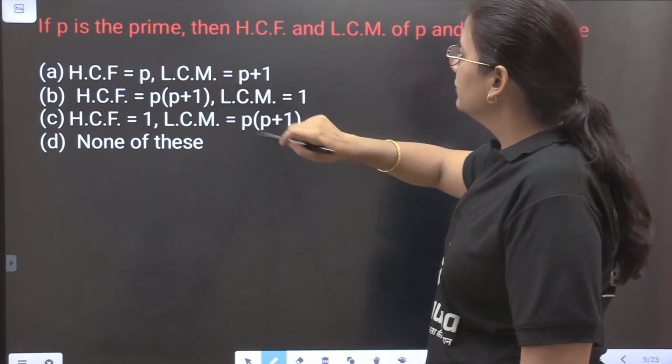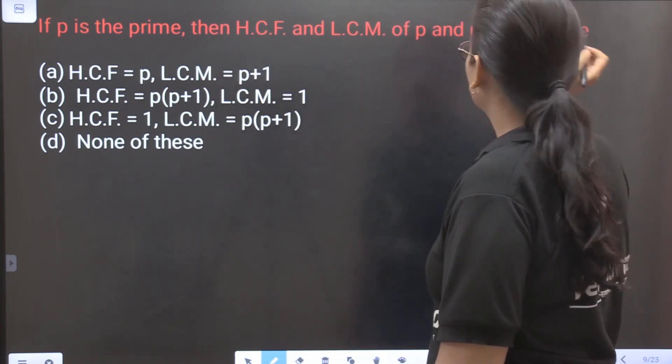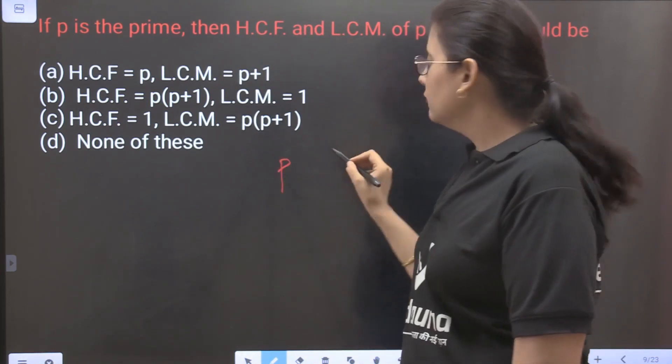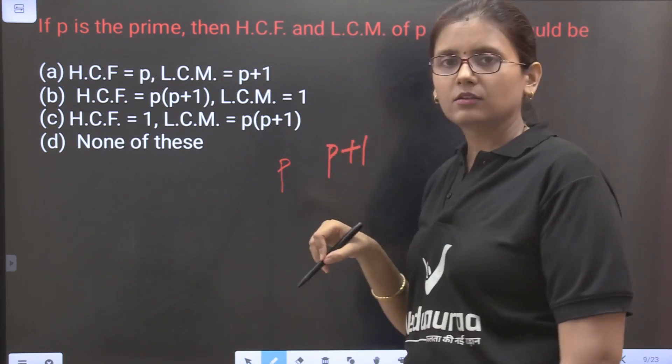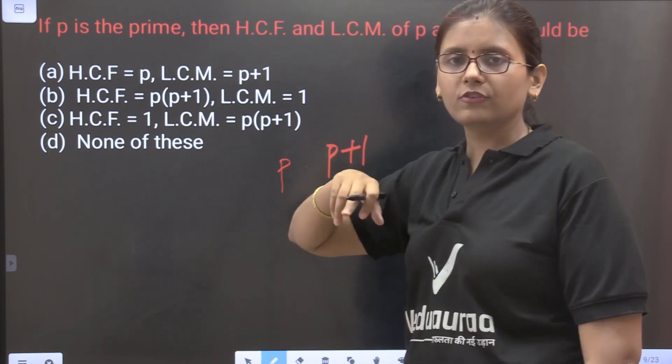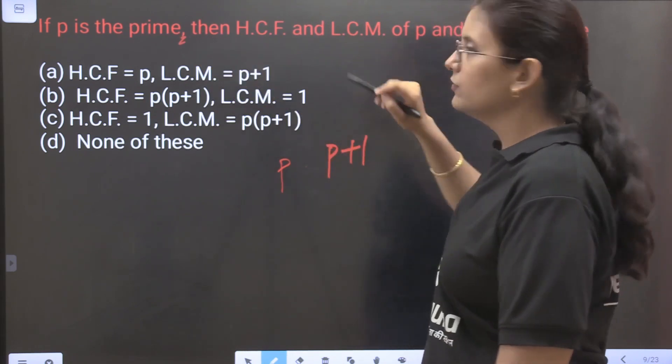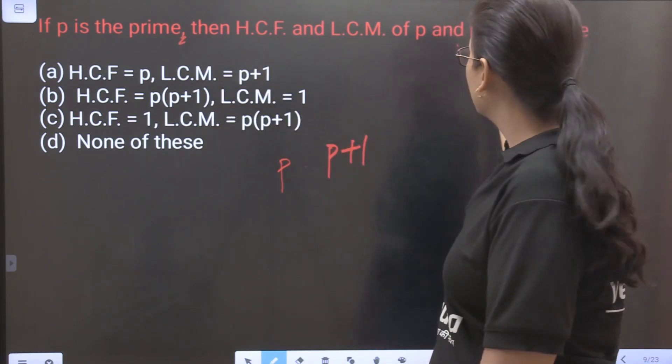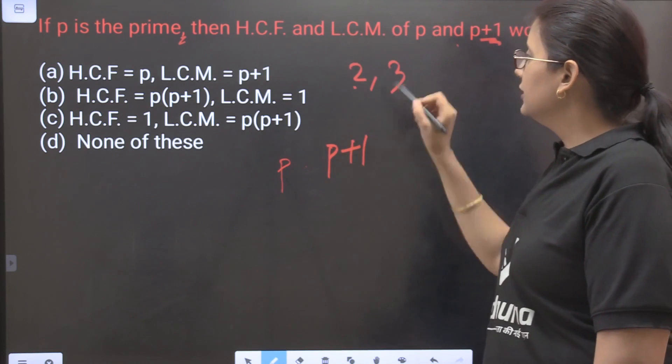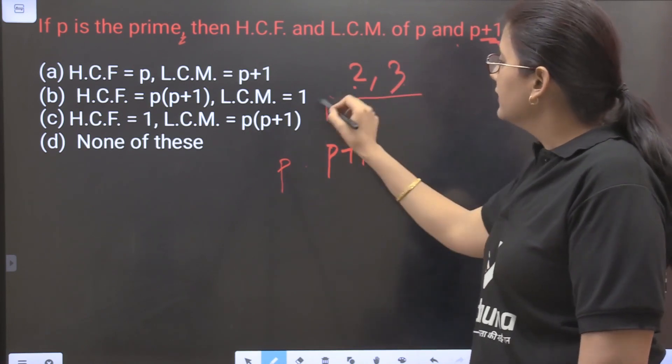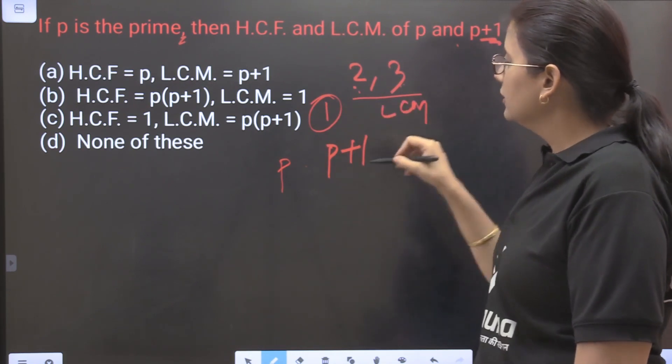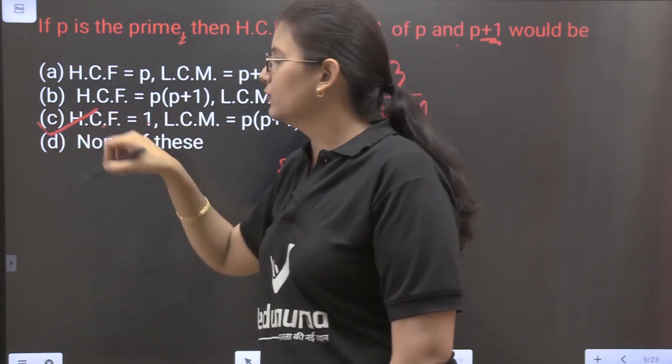If P is a prime number then HCF and LCM of P and P+1 would be? Now P is prime, so P will not divide P+1, there will be no common factor. So their LCM will be P into P+1 and their HCF will be 1 of course because this is prime. Now the second one will not be divisible by it because it is plus 1. Like for example we take 2 and 3, P and P+1. Now their HCF will be 1 and we will obtain these two LCM by multiplying. So HCF equals 1 and LCM equals P into P+1.